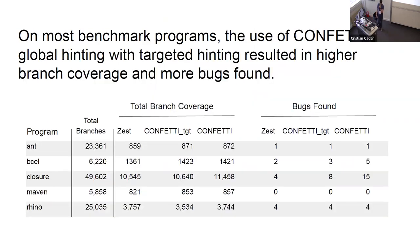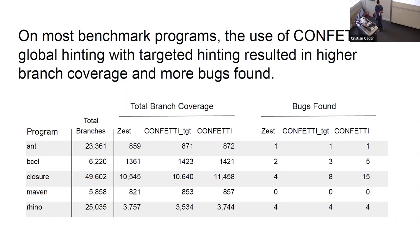We evaluated Confetti's branch coverage and bug-finding capabilities across a suite of benchmark programs, compared to the state-of-the-art parametric fuzzer Zest — which Confetti is actually built upon — as well as a version of Confetti that only uses traditional targeted hints. The benchmark programs include Apache Ant, B-Cell, Maven, Google's JavaScript compiler Closure, and Mozilla Rhino. We found that Confetti covers more branches across most benchmark programs. Additionally, it finds 15 previously unreported bugs, nine of which were unable to be found by either baseline.